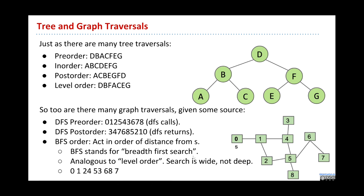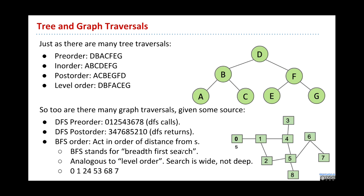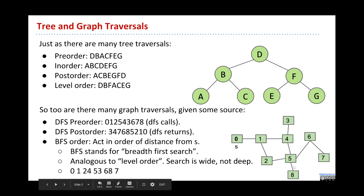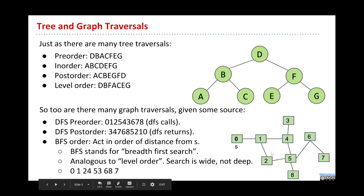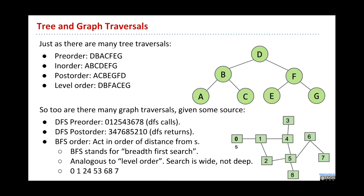BFS—breadth-first search—you're going wide, a lot of breadth, rather than deep. One valid BFS order is 0, 1, 2, 4, 5, 3, 6, 8, 7. You'll notice those vertices are at increasing distance from the source. Note that 2 and 4 are equidistant, so you could do those in either order. One little difference between tree traversals and graph traversals is that graph traversals are not, in general, unique, whereas tree traversals are.